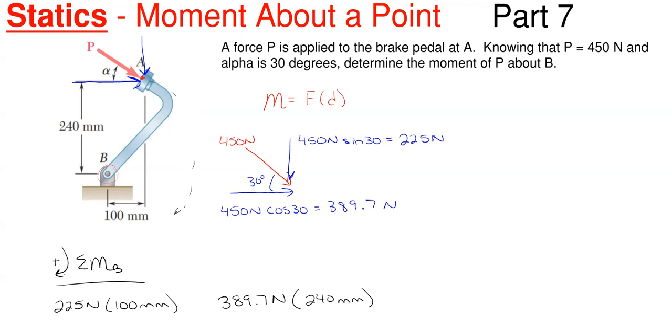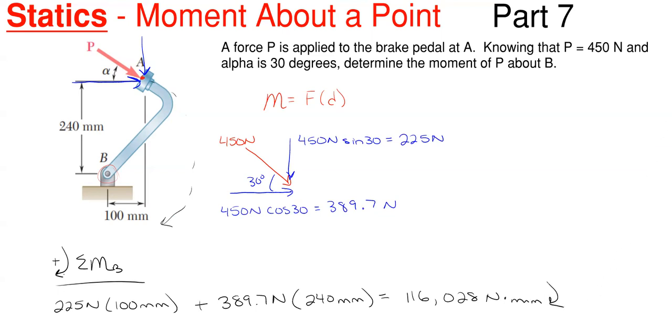Once again, this one is also rotating clockwise about point B as it tries to swing around here, so that would also be a positive rotation. And we only have two forces here, so we just add these up, and this will be our answer. So we will have here 116,028 newton millimeters of clockwise rotation about point B.